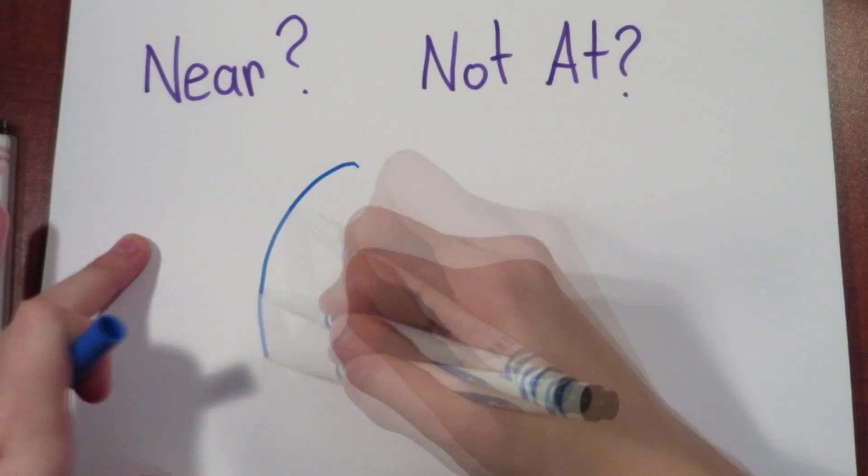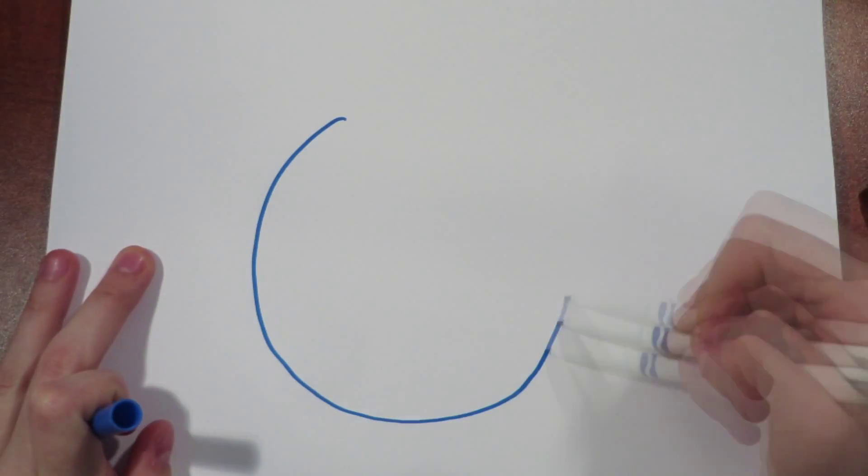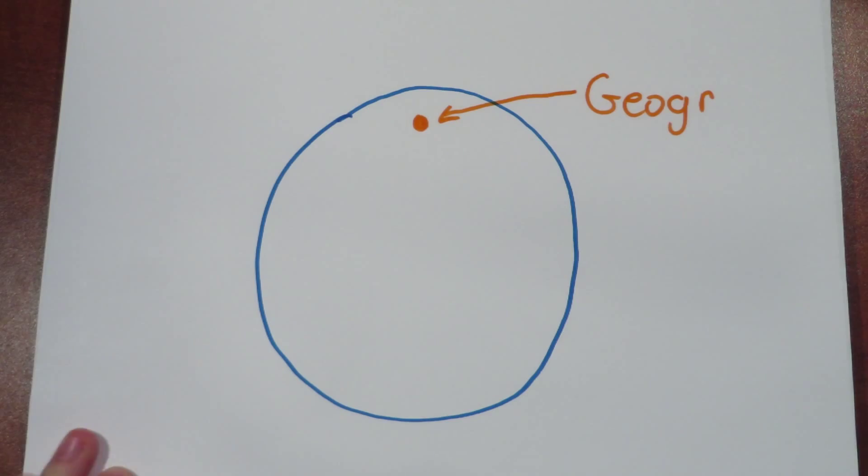If you're wondering why I said near the geological north instead of at the geological north, it's because the magnetic north is constantly changing. The difference between the geographical north and what our compass tells us is north is measured by an angle.